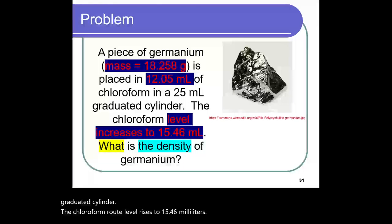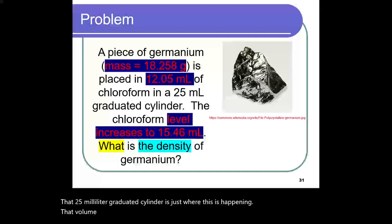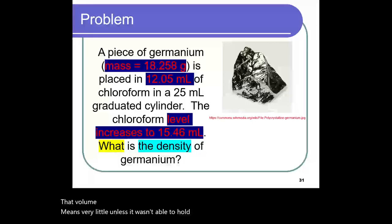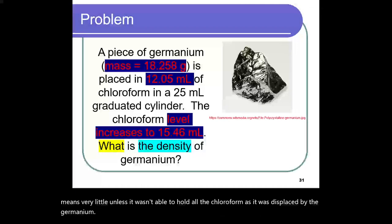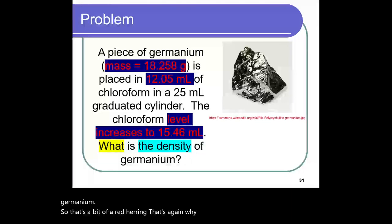That 25 milliliter graduated cylinder is just where this is happening. That volume means very little, unless it wasn't able to hold all the chloroform as it was displaced by the germanium. So that's a bit of a red herring. That's again why we sometimes want to ignore numbers until we really need to figure out.